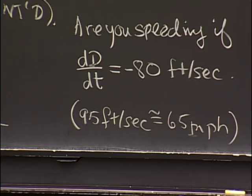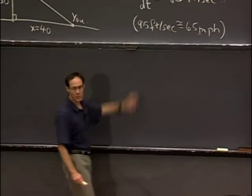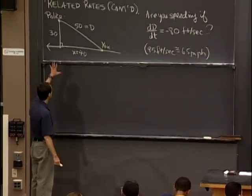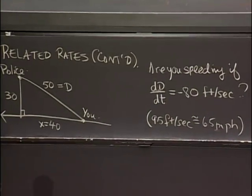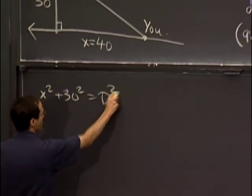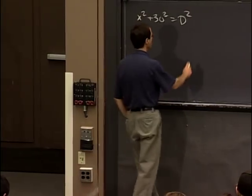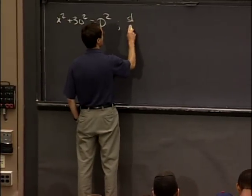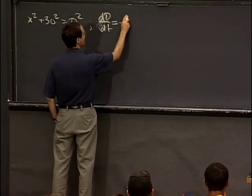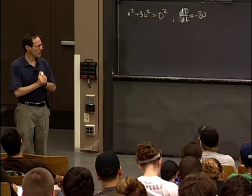So this is where we were last time, and let's solve this problem. There's a right triangle, so there's a relationship between these lengths: x squared plus 30 squared is equal to d squared. The second relationship we have is dd/dt is equal to minus 80. The idea here is relatively straightforward — we just want to use differentiation.